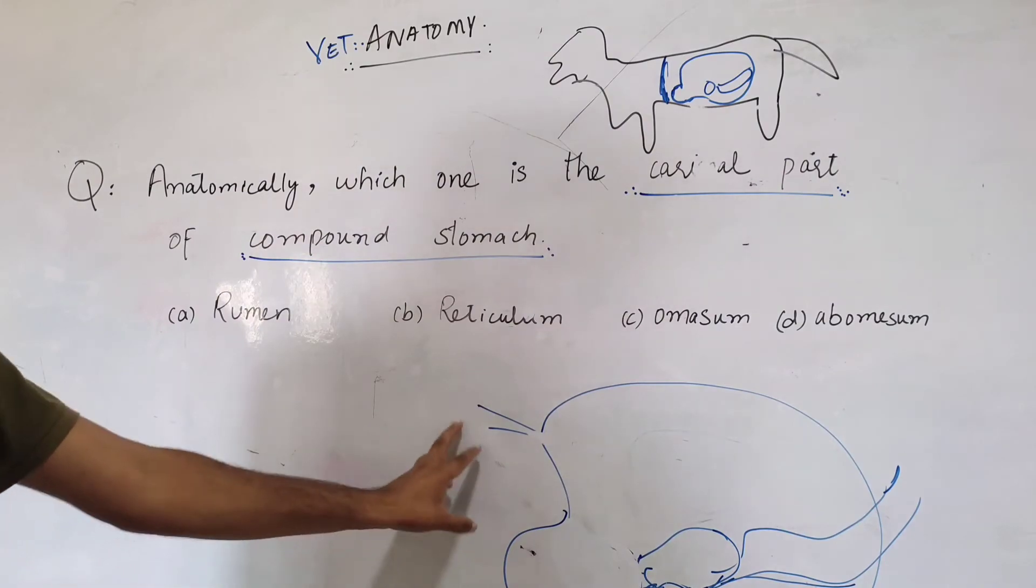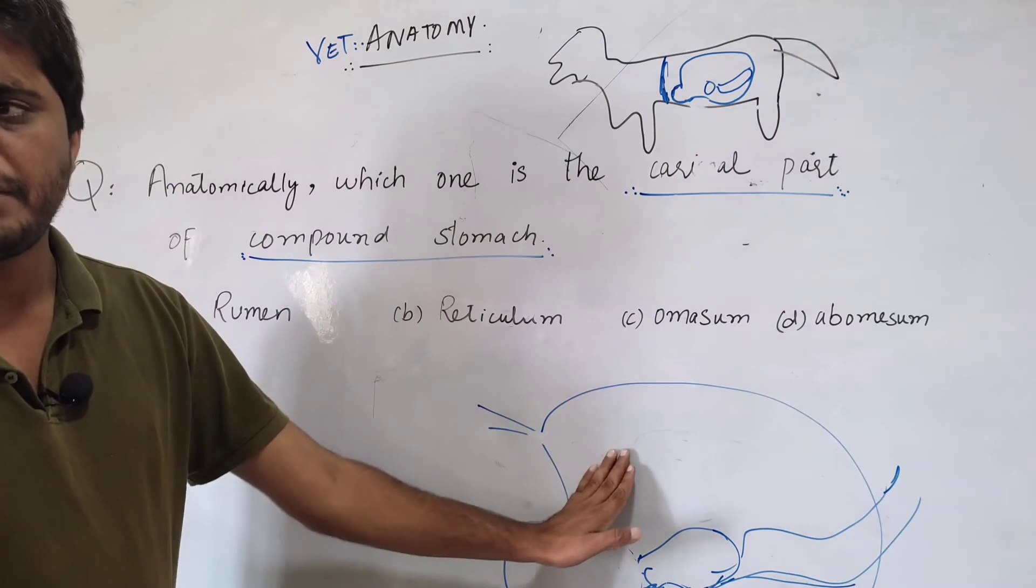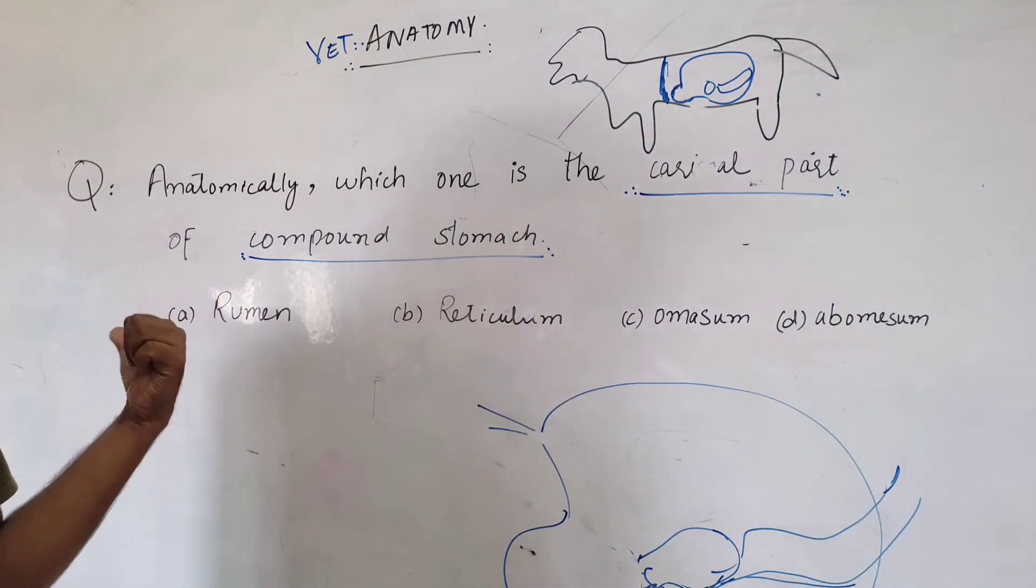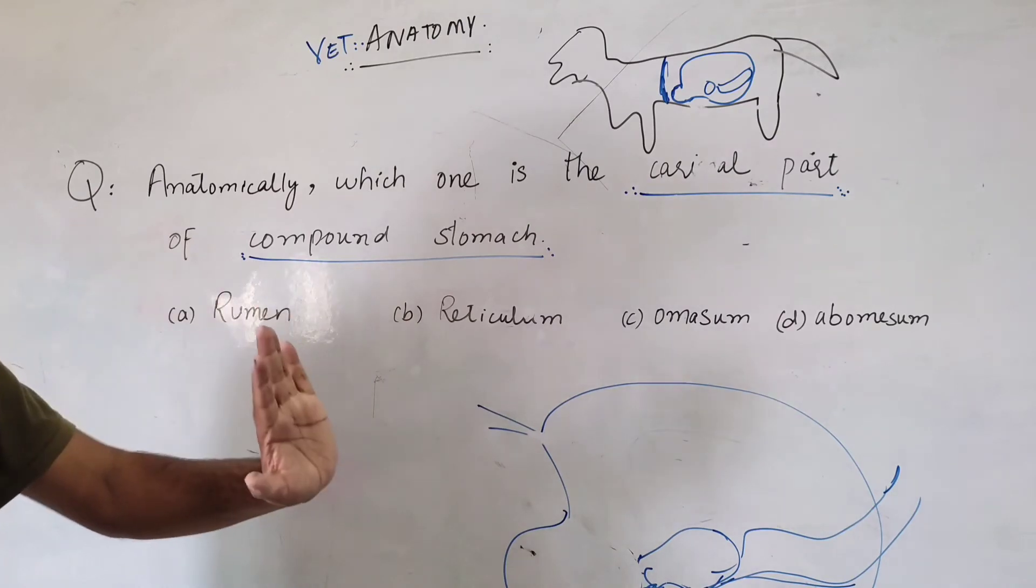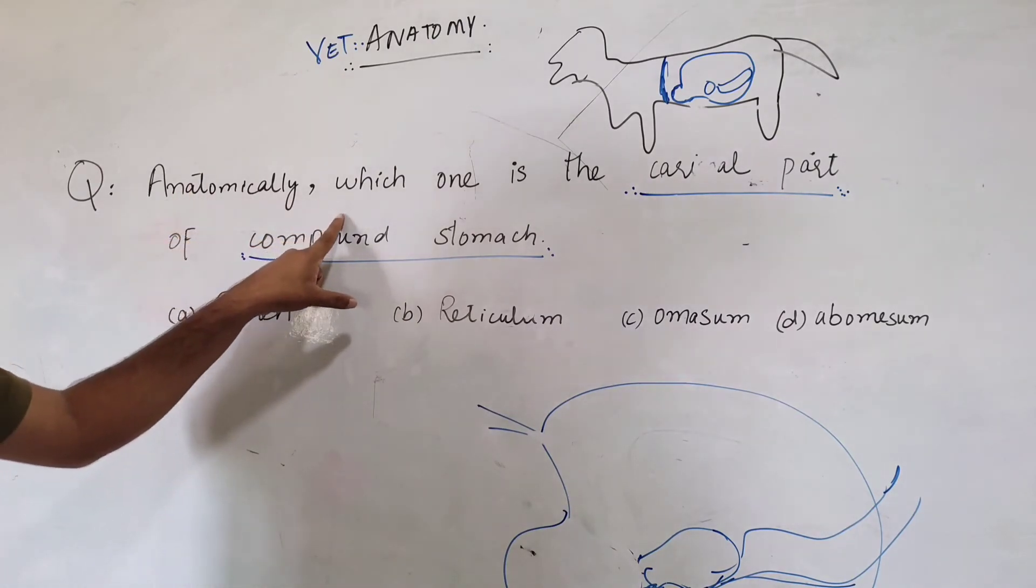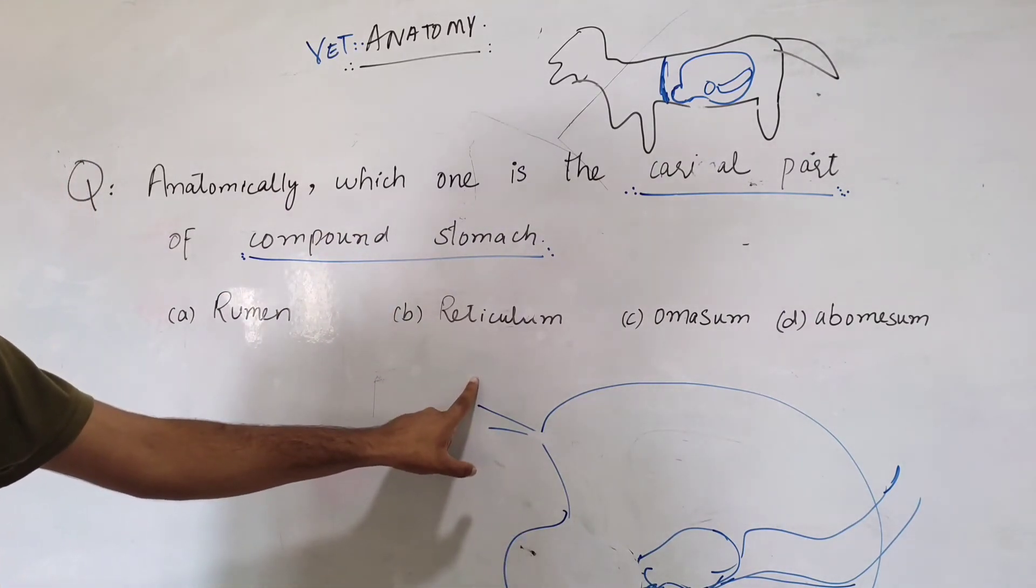There's a little confusion with the physiology because the esophagus is opening into the rumen, so people sometimes consider anatomically also the rumen is the first part. No. Functionally, rumen is the first part, but structurally or according to anatomy, reticulum is the first part or cranial part.